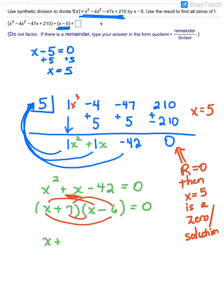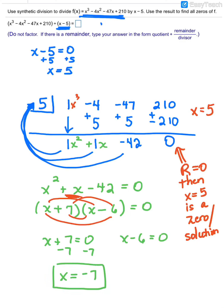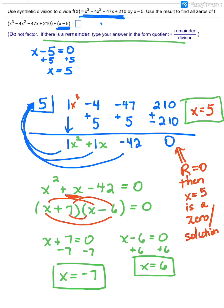Once you do, separately set each factor equal to 0 and solve. If x plus 7 equals 0, subtracting 7 on both sides gives x equals negative 7 — a second zero of the polynomial. And if x minus 6 equals 0, adding 6 to each side gives x equals 6 as the other zero. So we had x equals 5 from the beginning, and then x equals negative 7 and x equals 6. Since there was no remainder, we went ahead and found all of the zeros for this function.